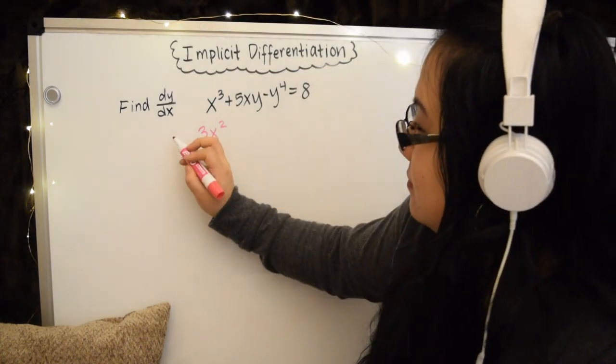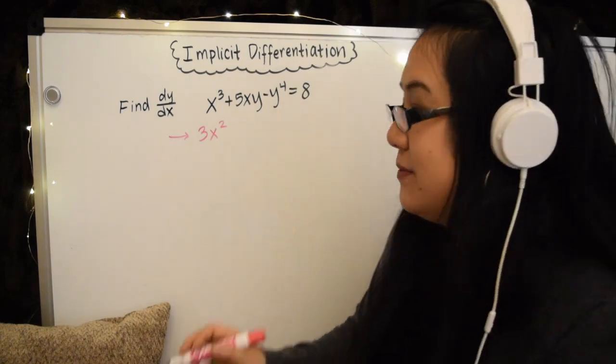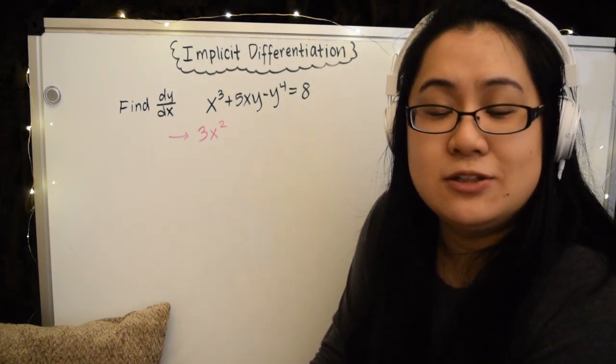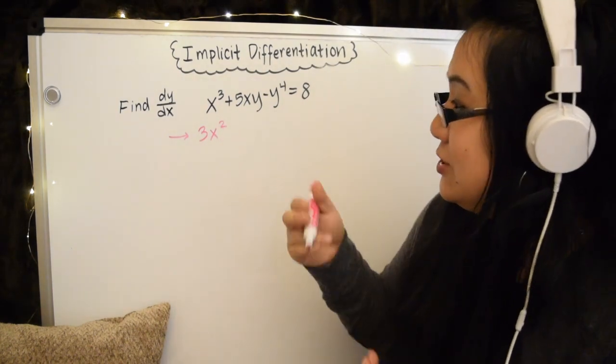So just piece by piece. The derivative of this thing with respect to x, of course that means we can take the derivative of this plus the derivative of this minus the derivative of this, right? So let's just do that one by one. The derivative of x cubed with respect to x is 3x squared.